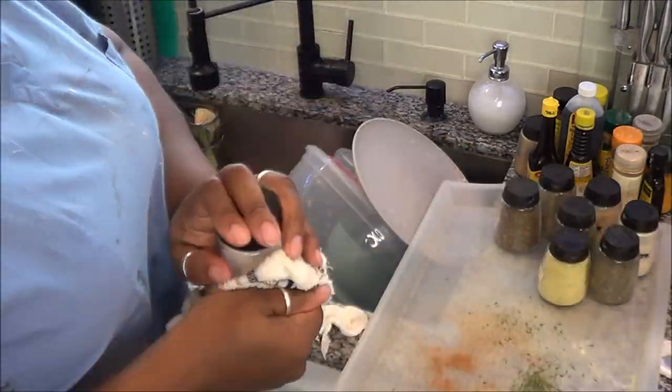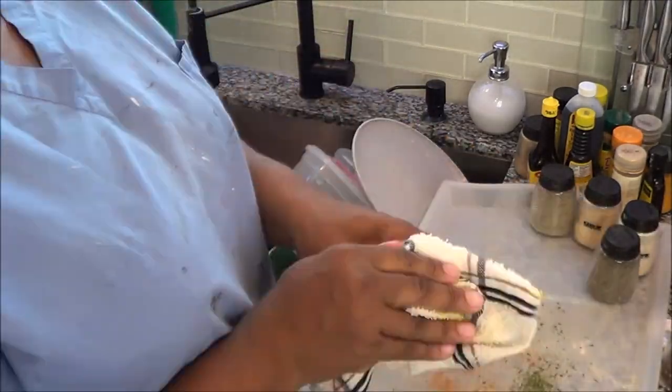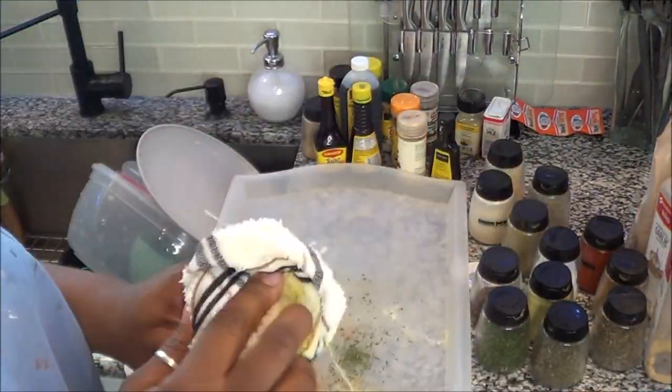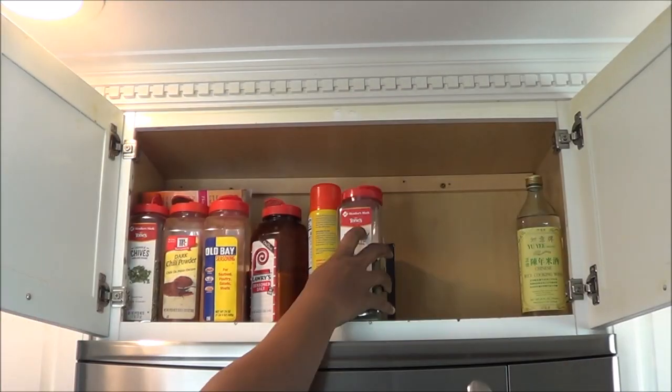So after I'm done refilling all of the containers, I take and wipe them down with the same rag, just a little bit of Dawn dish liquid, nothing major. And I might have a tad bit of bleach in here.